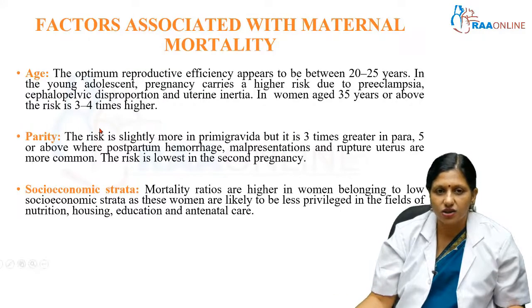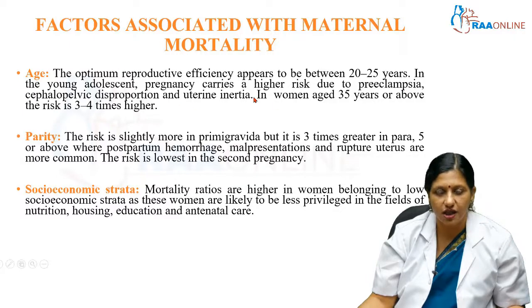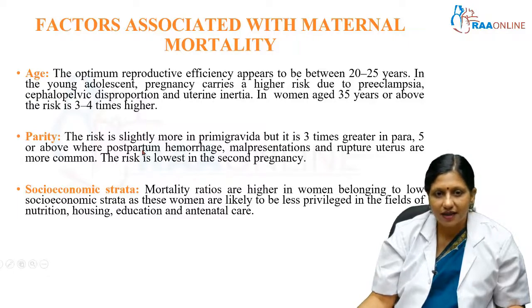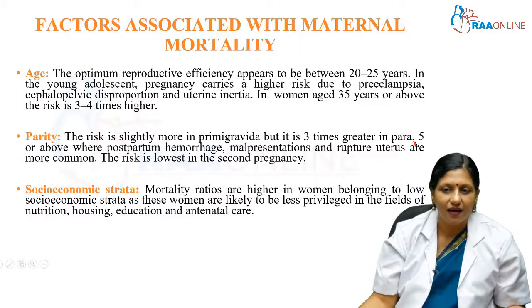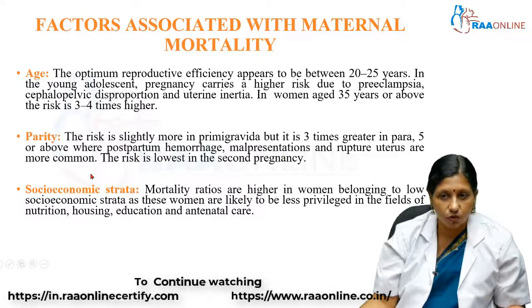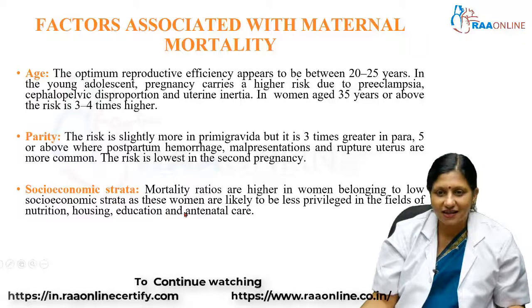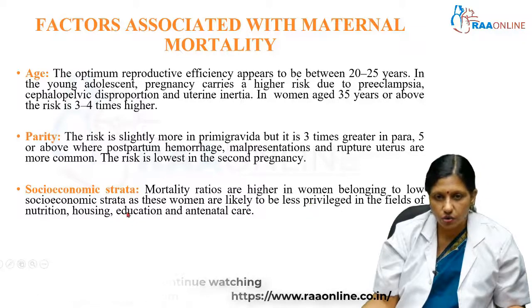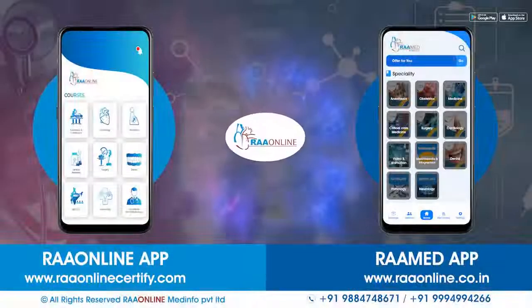Associated factors include age — optimum reproductive efficiency is between 20 to 25 years. Young adolescent pregnancies carry higher risk due to pre-eclampsia, cephalopelvic disproportion (CPD), and uterine issues, and women above 35 years are also at higher risk. There is slightly more risk in primigravidae, but it is three times greater in parity 5 or more, where postpartum hemorrhage, malpresentation, and rupture uterus are more common. Mortality is also higher in women of low socioeconomic status.